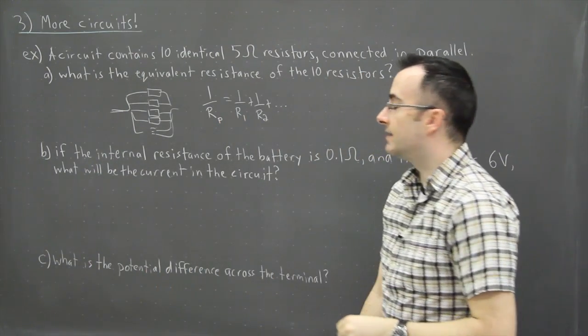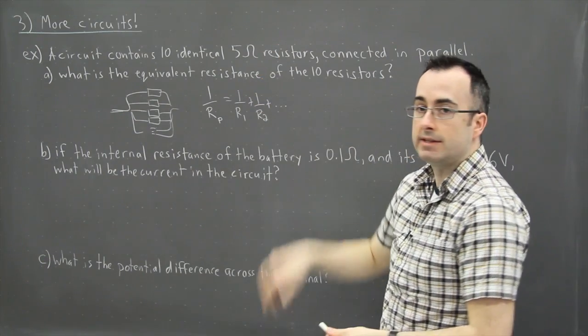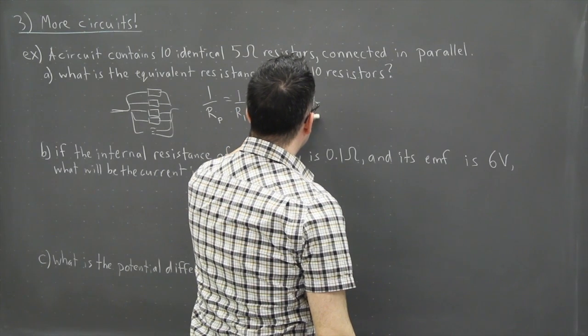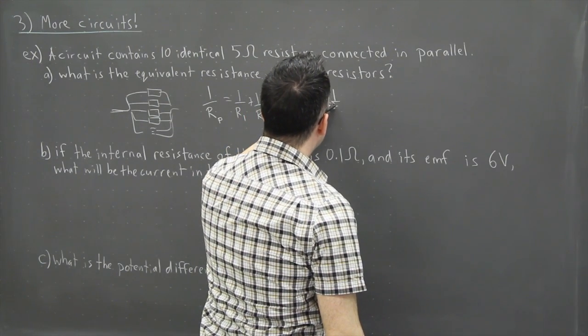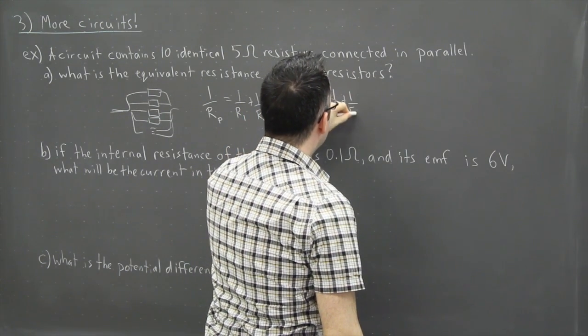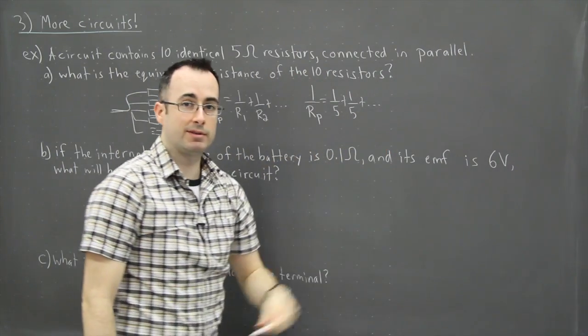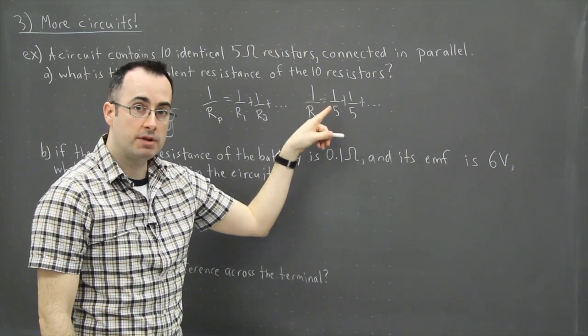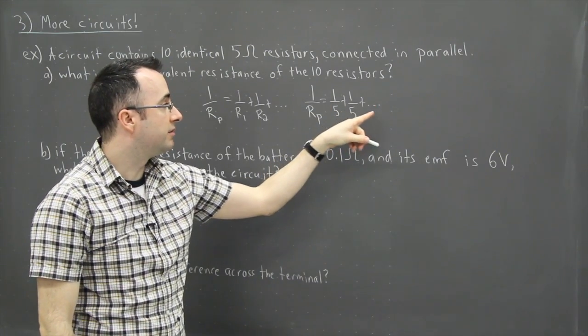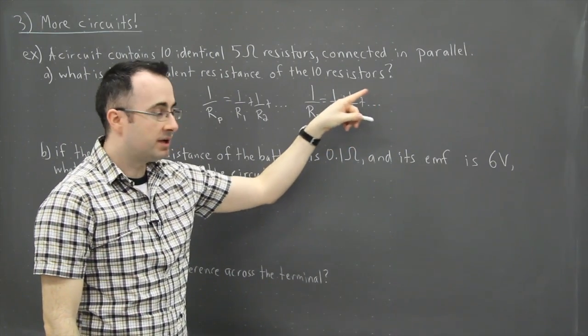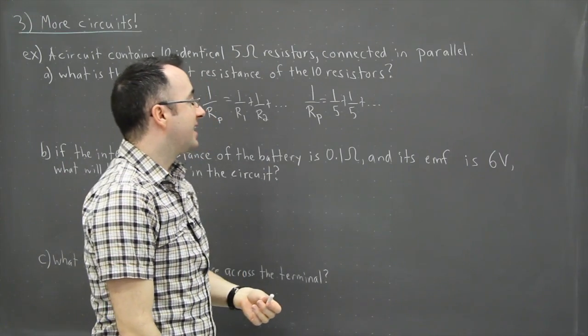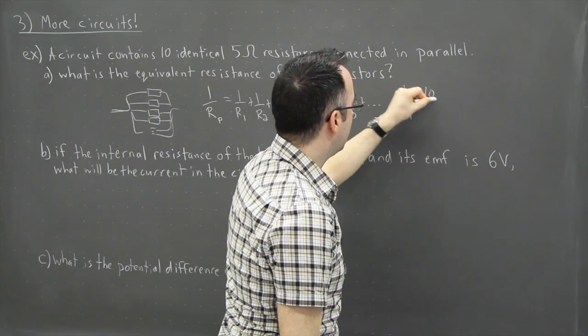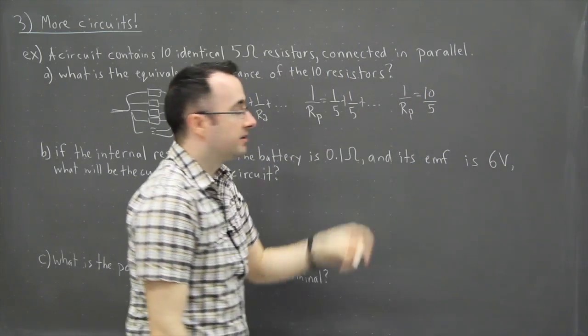Now in our case then, we have a whole bunch of 5 ohm resistors. So I could say that 1 over Rp equals 1 over 5 plus 1 over 5 plus, and I have 10 of those. But because I have the same denominator, I have the same common denominator here for all of them, well I've got 1 plus 1 plus 1, I've got 10 of those. So that means I can say that 1 over Rp equals 10 over 5.